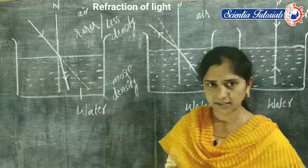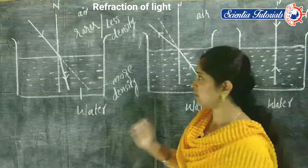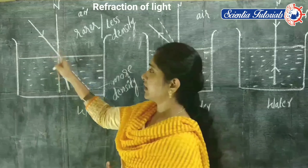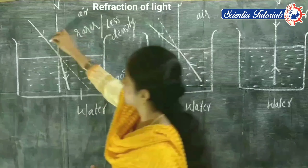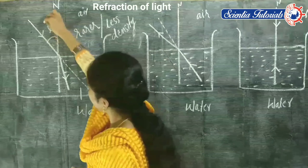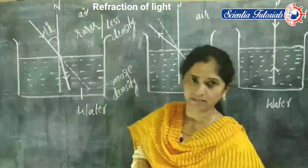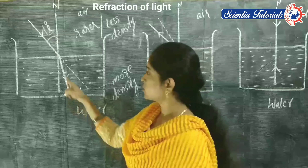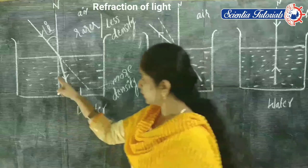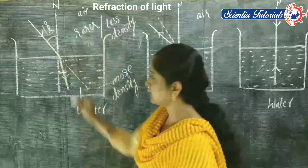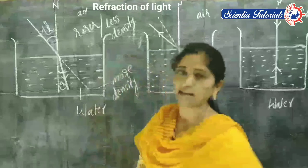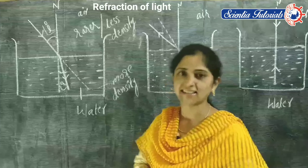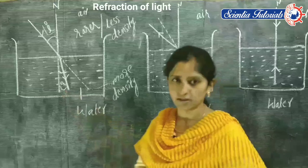Now let's look at the angle of incidence and the angle of refraction. The incident ray makes an angle with the normal — that angle is called the angle of incidence. The refracted ray also makes an angle with the normal — that angle is called the angle of refraction.